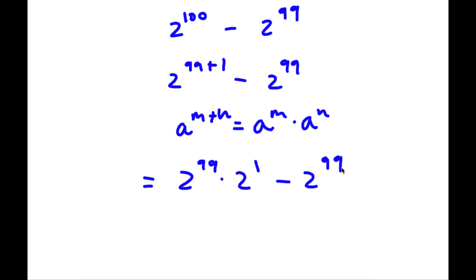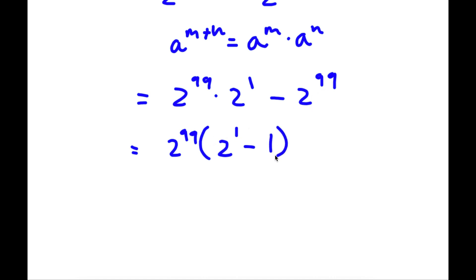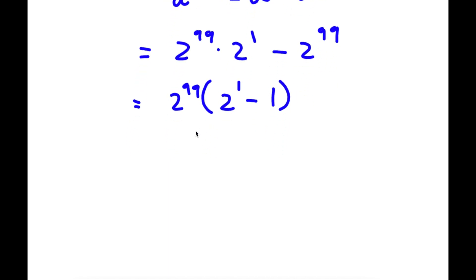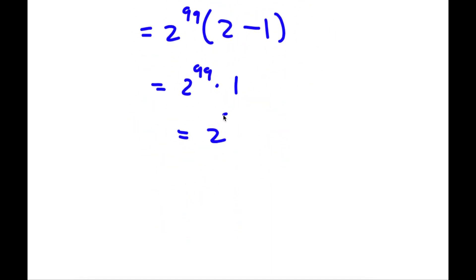Then I have minus 2 to the power of 99 at the end. Now because both terms have 2 to the power of 99, if I factor out 2 to the power of 99, I get 2 to the power of 99 times 2 to the power of 1, minus 1. Now 2 to the power of 1 is 2, so I have 2 to the power of 99 times 2 minus 1. And 2 minus 1 is simply 1, so I have 2 to the power of 99 times 1. Anything times 1 is itself, so now I have 2 to the power of 99.